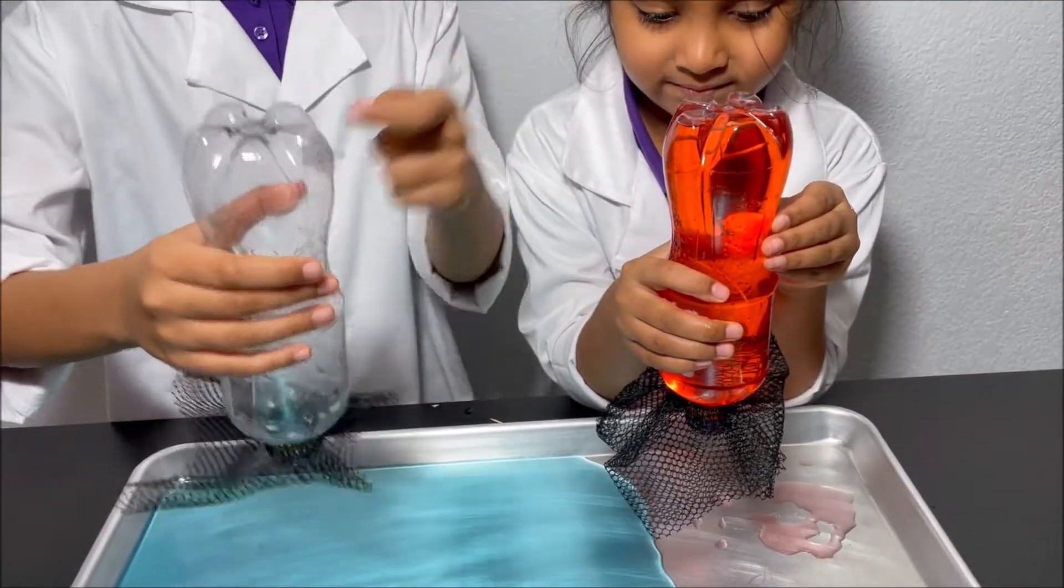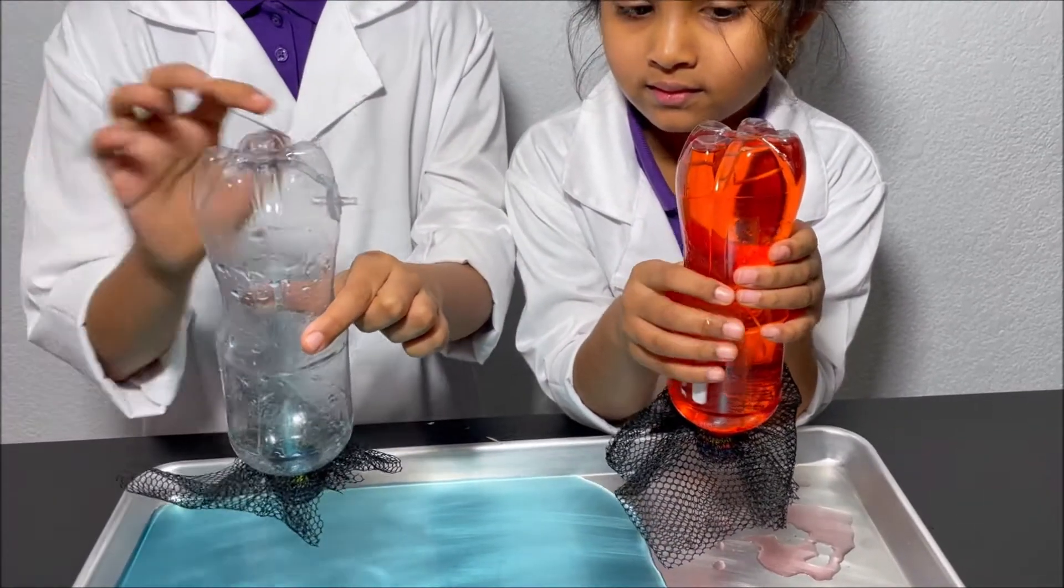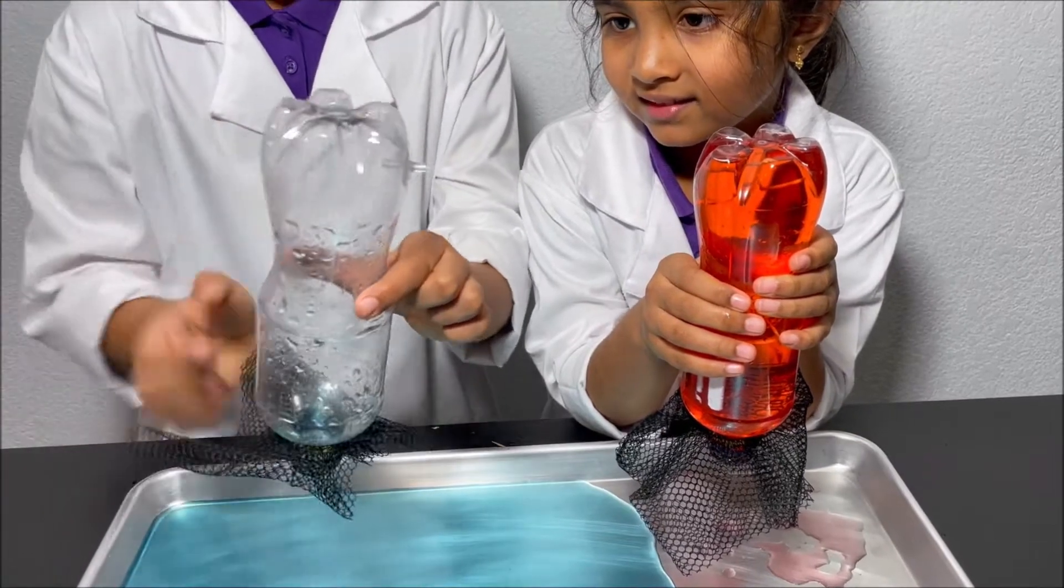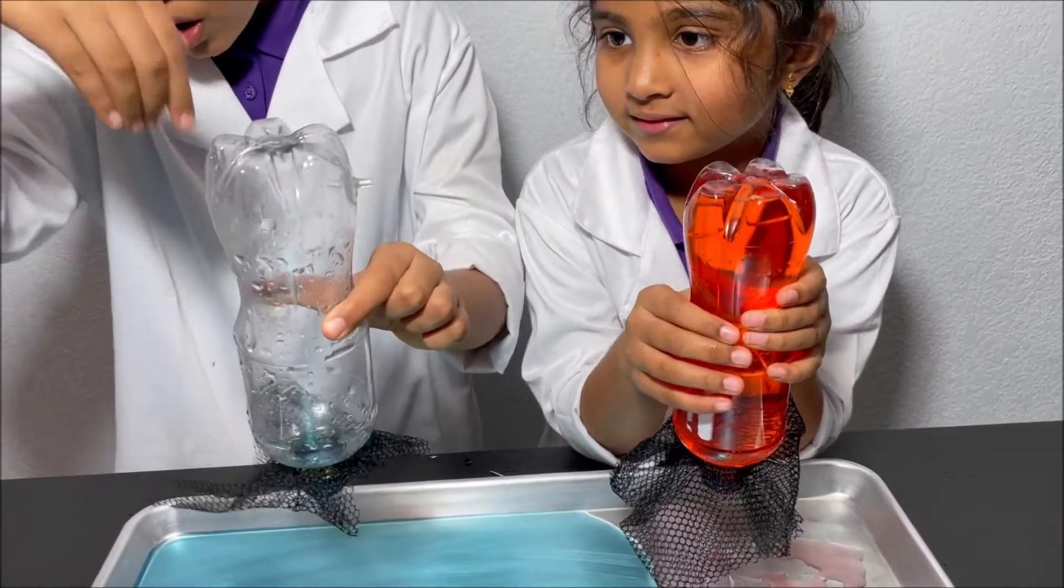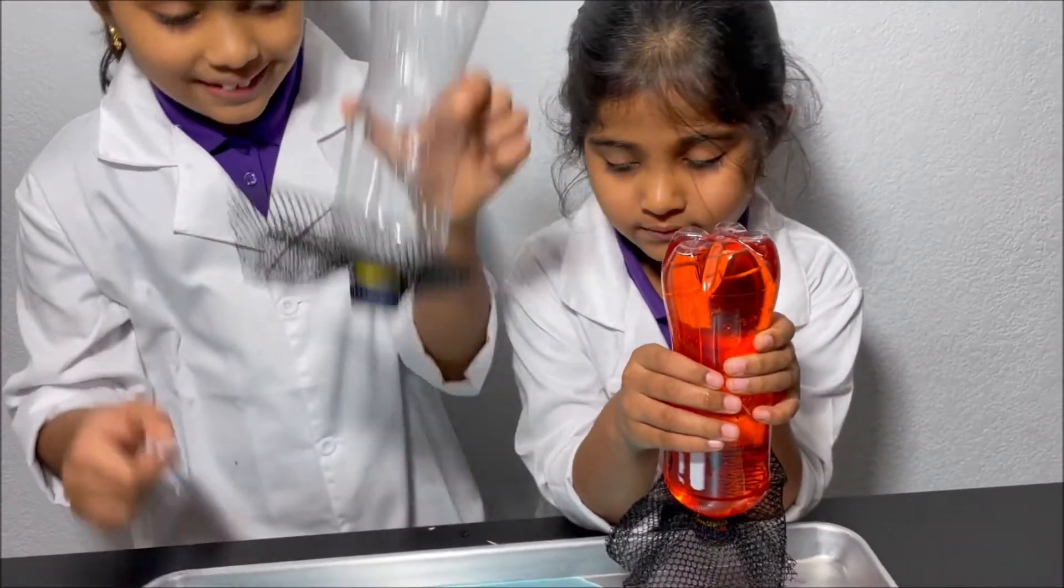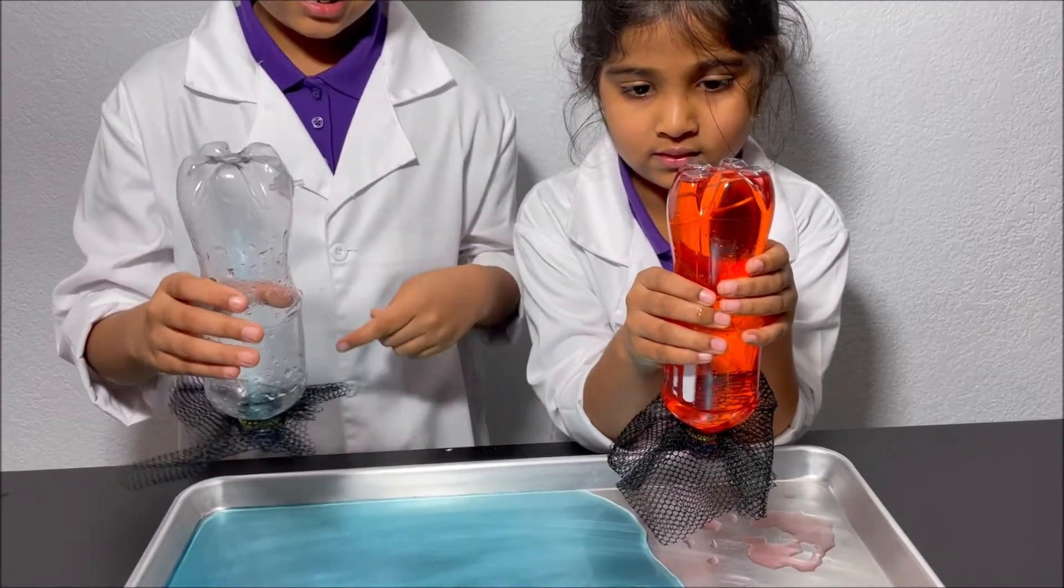Because when I took the skewer off the hole from the bottle, air rushed into the bottle through the hole, and it pushed on the water, so the water went out from the net hole. That's why the water went out when I took that piece of skewer.